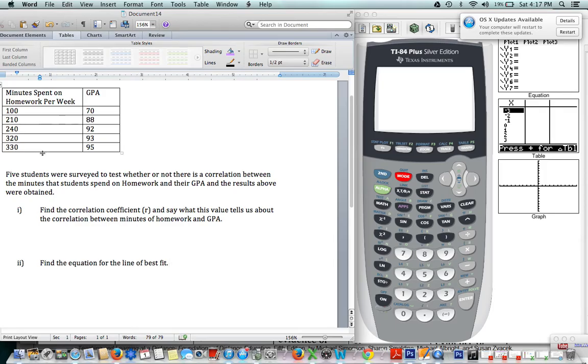So imagine you surveyed some students. In this case, just to make it really easy to enter, I only surveyed five. But realistically, if you're doing a real statistical study, you'd want to survey more than five students. So the questions that I asked were how many minutes do you spend on your homework and what is your GPA? So a student who spent 100 minutes on his or her homework had a GPA of 70. And these are the results for all five students. So I want to know, is there an actual relationship between homework and GPA?